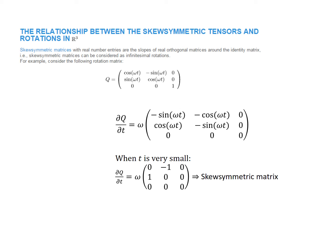Skew-symmetric matrices are considered infinitesimal rotations. Consider a rotation matrix Q that is a function of time t and rotation speed omega. Taking the time derivative, partial Q by partial t, and pulling out omega, cosine omega t becomes negative sine omega t and so on. Looking at this matrix when t is very small — sine 0 is 0 and cosine 0 is approximately 1 — we get a skew-symmetric matrix. This shows that the derivative of this rotation matrix, when time is small, is skew-symmetric. The next slide gives a more formal presentation.